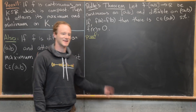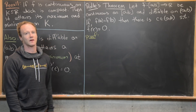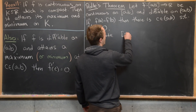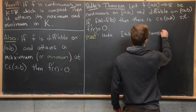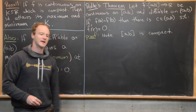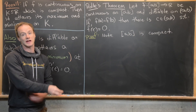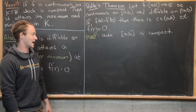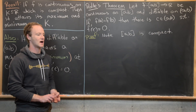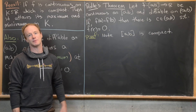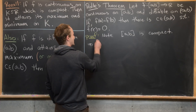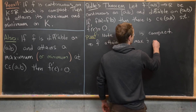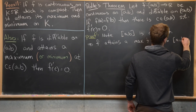Now that we've recalled some previous results and looked at a picture of the situation, let's look at the proof. The first thing to notice is that the closed interval [a, b] is compact — it's a compact set of real numbers. We know that because compactness in the real numbers is equivalent to a set being closed and bounded, and this interval is obviously closed and bounded. Since this closed interval is compact, F attains its maximum and minimum on the closed interval [a, b].